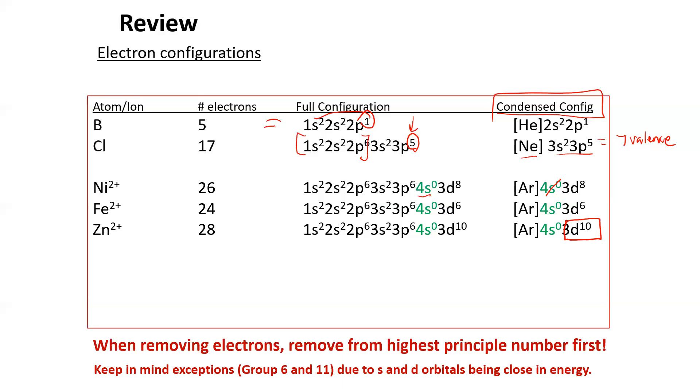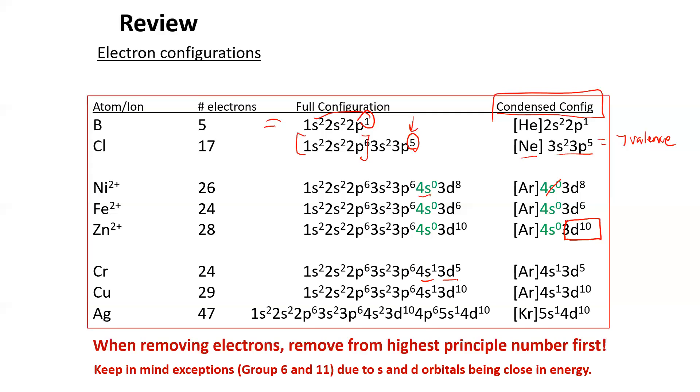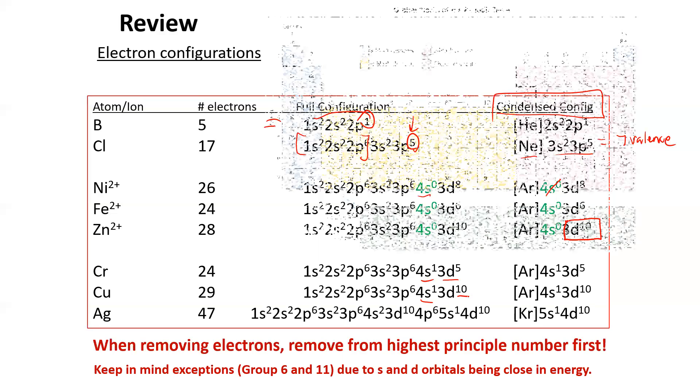And then of course, keep in mind that group six and 11, because of that s and d being so close in energy due to energy sublevel splitting due to Coulomb's law and penetration and shielding, we see that we get these irregular patterns where the s sublevel is halfway filled so that it can make the d sublevel all the way filled. Or even in some cases, it's halfway filled to completely fill that d sublevel, like we see in copper and silver. And again, where do we see that?